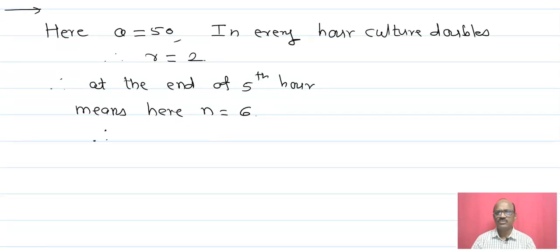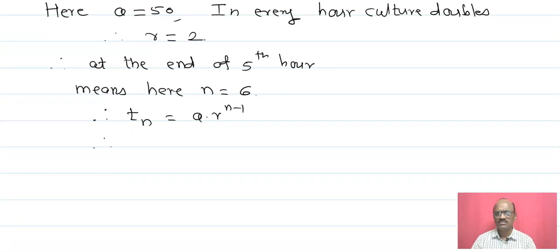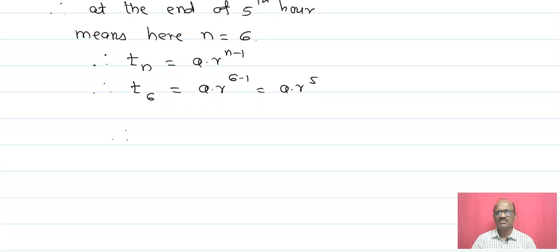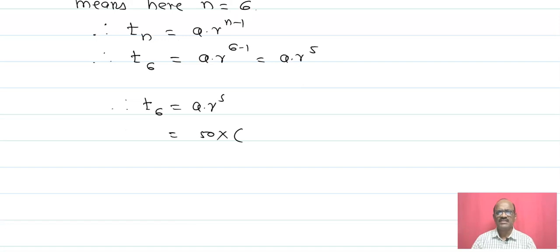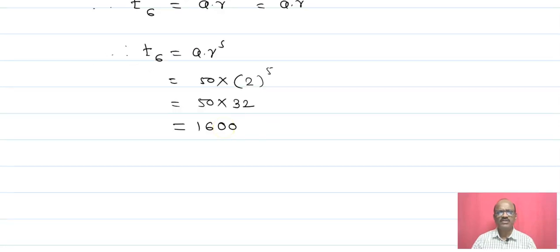n equals 6 we have to take. Therefore, tn equals a into r raise to n minus 1. Therefore, t6 equals a into r raise to 6 minus 1, that is a into r raise to 5. So t6 equals a into r raise to 5. That is 50 into 2 raise to 5, that is 50 into 32, that is 1600.